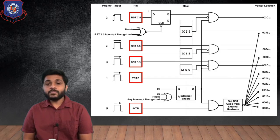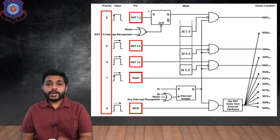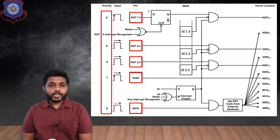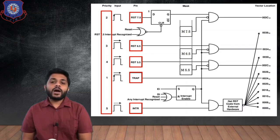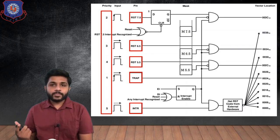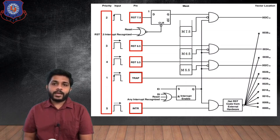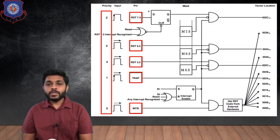All these interrupts have priority. TRAP has the highest priority and is a non-maskable interrupt, but the remaining interrupts are maskable. The priority order after TRAP is RST 7.5, then RST 6.5, then RST 5.5, and finally INTR.